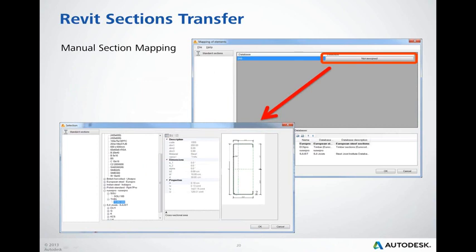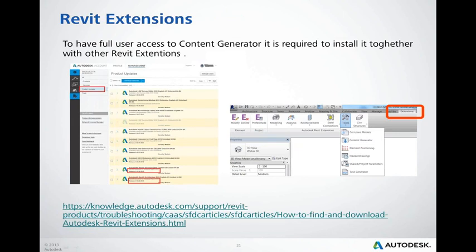If the name is not recognized, a mapping dialog window opens and it is possible to assign a section to any available section on the list. To have full user access to the content generator, it is required to install it together with other Revit extensions — it is available in your Autodesk account. A link to the complete knowledge base article on how to find Revit extensions is provided at the bottom of this slide.